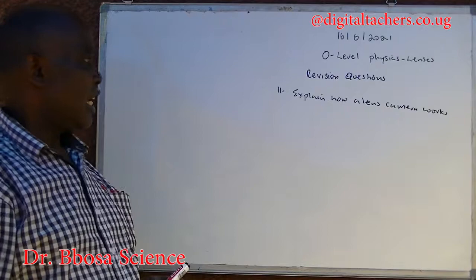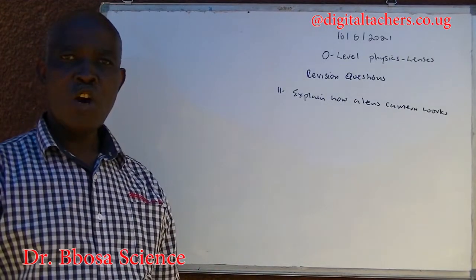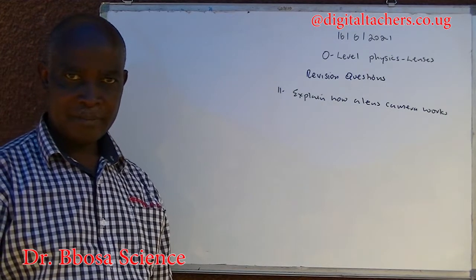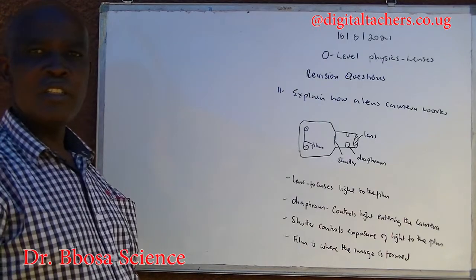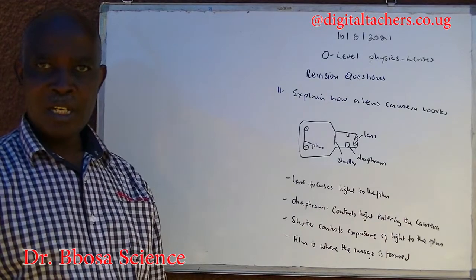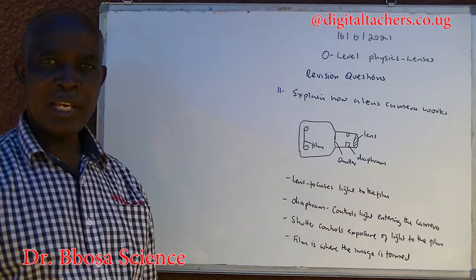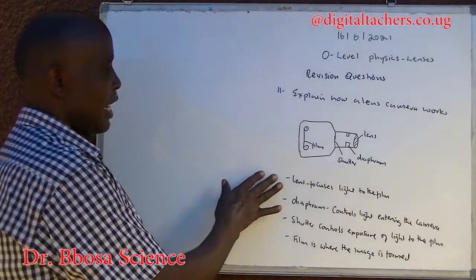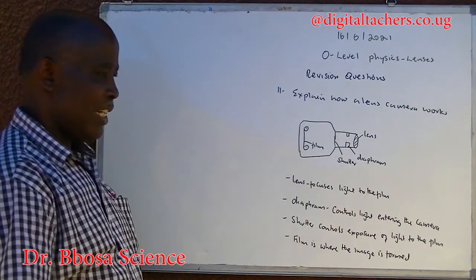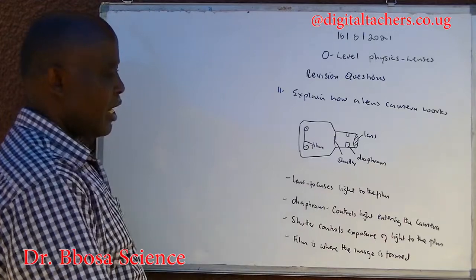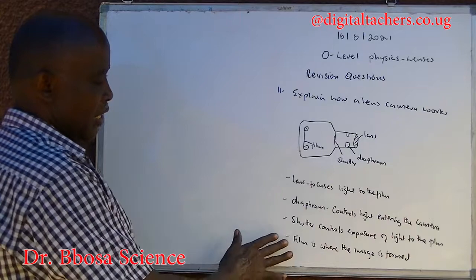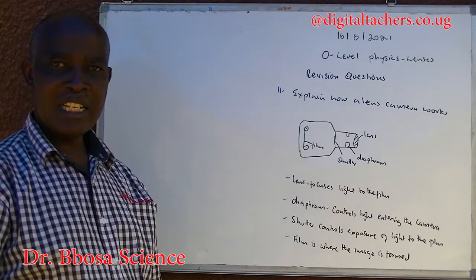Number eleven: explain how a lens camera works. You can pause and answer. Draw a diagram of a lens camera and describe the functions of the main parts. The lens focuses light onto the film. The diaphragm controls the amount of light entering the camera. The shutter controls the duration of exposure of light to the film. The film contains light-sensitive pigment where the image is formed.